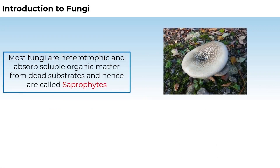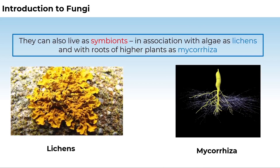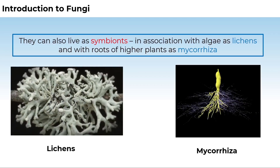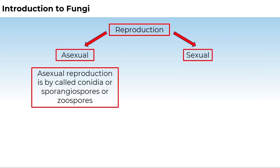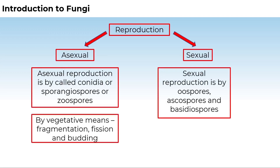Most fungi are heterotrophic and absorb soluble organic matter from dead substrates, and hence are called saprophytes. Those that depend on living plants and animals are called parasites. They can also live as symbionts in association with algae as lichens and with roots of higher plants as mycorrhiza. Asexual reproduction is by spores called conidia, sporangiospores, or zoospores. Sexual reproduction is by oospores, ascospores, and basidiospores. Reproduction can also take place by vegetative means such as fragmentation, fission, and budding.